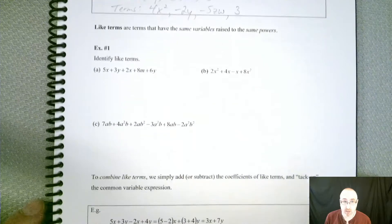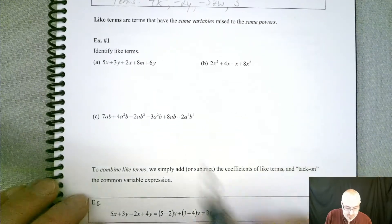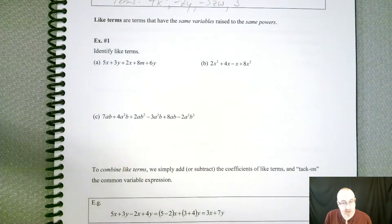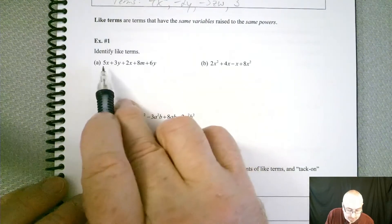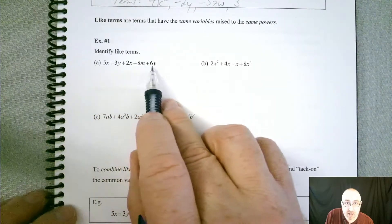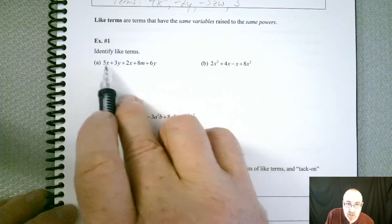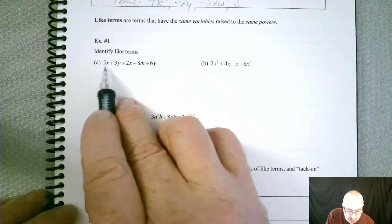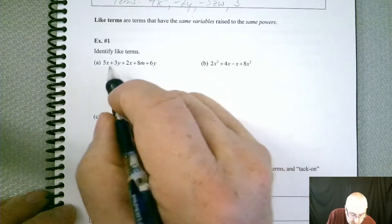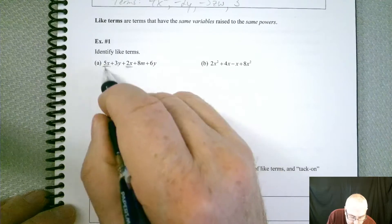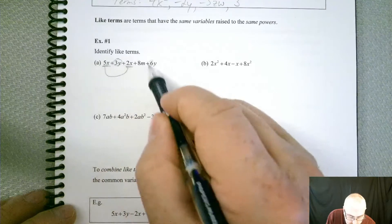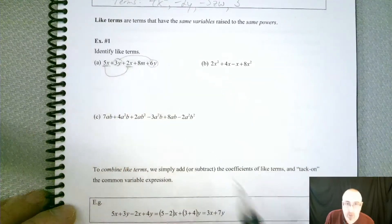Now it doesn't say anything about the coefficients. So that is not an issue when it comes to determining if you have like terms or not. So let's take a look at a few examples. And just identify them. We're not going to combine them yet. Because we're going to see how to do that in a minute. Just identify them. So we have 5x plus 3y plus 2x plus 8m plus 6y.